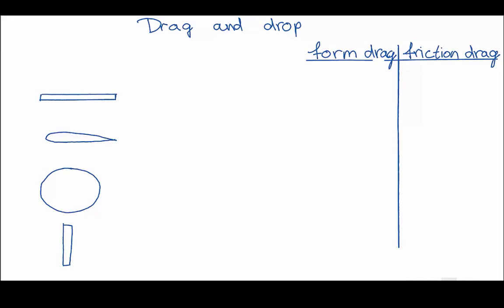The first one, the small plate, is a thin plate parallel to the flow. The second one would be a wing profile, like the wings you have on a plane. The third one would be, and don't mind my drawing, a perfect sphere. And the last one would be a plate perpendicular to the flow.